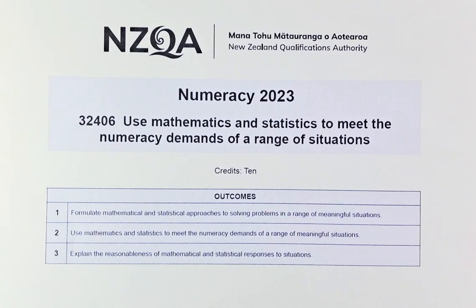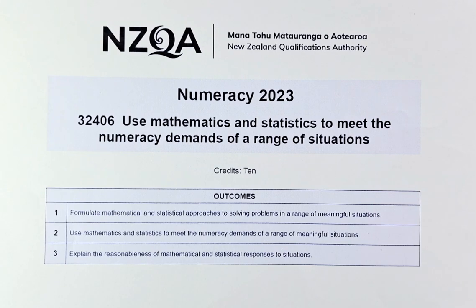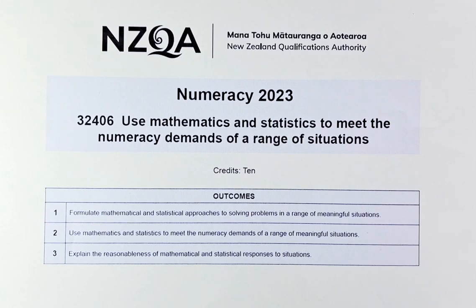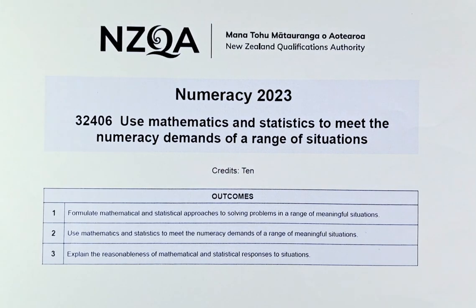Good day! In this video, we are looking at the numeracy exam paper held in June 2023. The title of this paper is 32406, Use Mathematics and Statistics to Meet the Numeracy Demand of a Range of Situations. This is a unique standard.